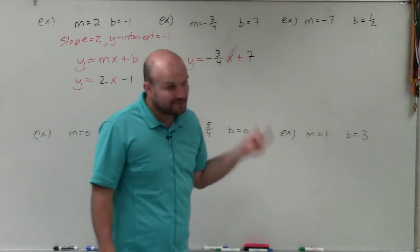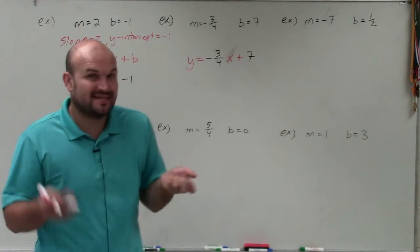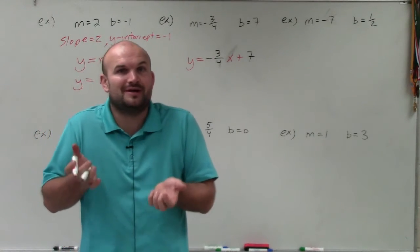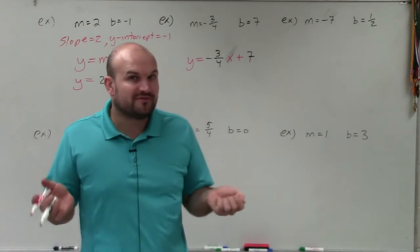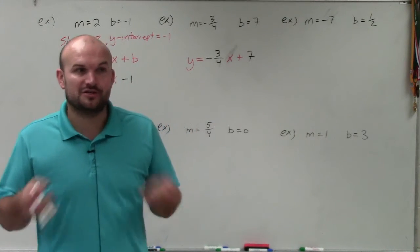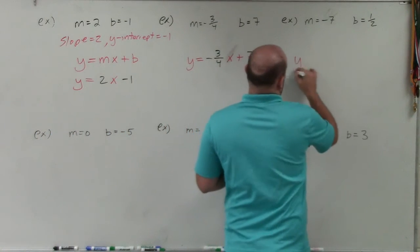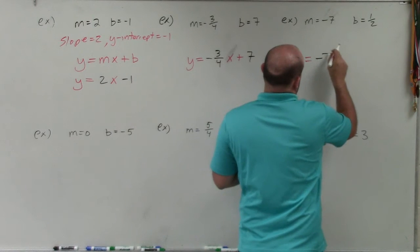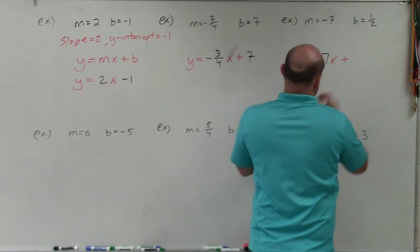Over here, this one confuses a lot of students, and this is why I decided to do so many examples, is because they see the fraction. And usually, we only have fractions for slope, because slope represents a ratio. However, the y-intercept can be a fraction. You can cross the y-axis at a fraction and not an integer. So therefore, this would be y equals negative 7x plus 1 half.